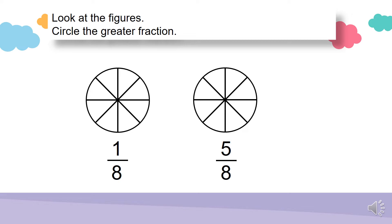Let's look at a sample question: circle the greater fraction. In the first figure, 1 over 8 means only 1 out of the 8 equal parts is shaded. In the second figure, 5 out of 8 equal parts are shaded. Which figure is shaded more? 5 over 8. This means that 5 over 8 is the greater fraction.